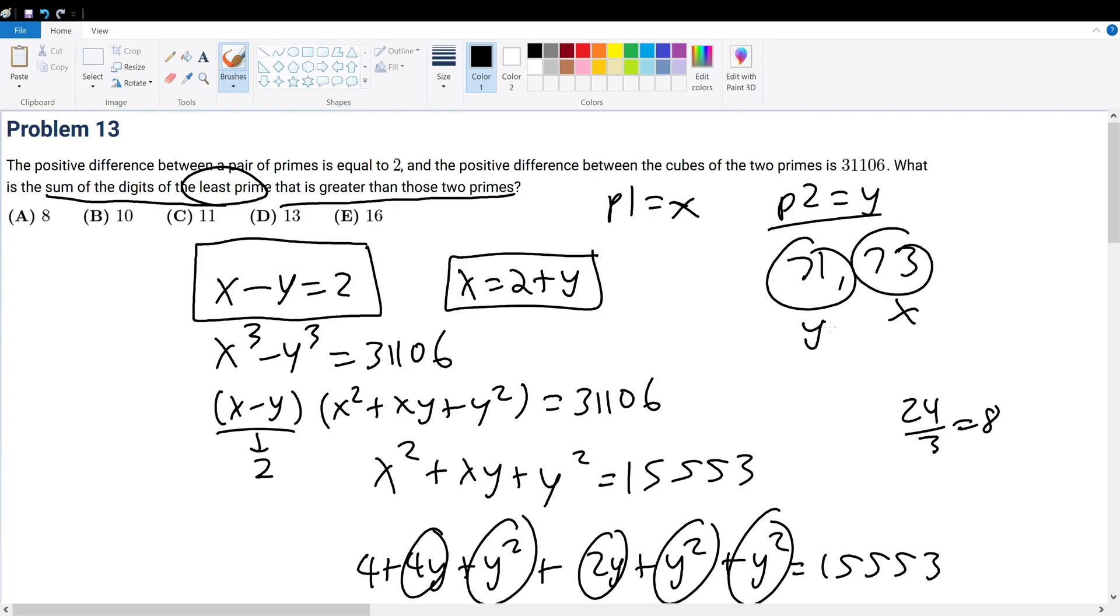What is the prime that's greater than these two primes? Well, it could be 74, 75, 76, 77, 78. Wait, 79 is a prime and that's greater than the primes 71 and 73. So 79 is our final answer. Therefore, summing 7 plus 9 gives you 16, bringing you to answer choice E.